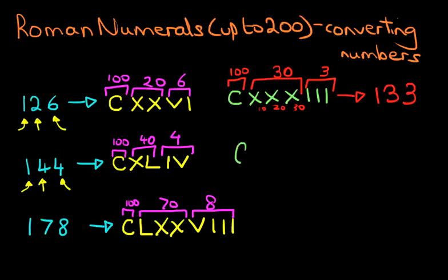Let's have a look at the next one. This time we've got C, L, I, X. Now what number does that represent? Well, again, we start on the left-hand side. We've got a C, just one of them, so that is 100.